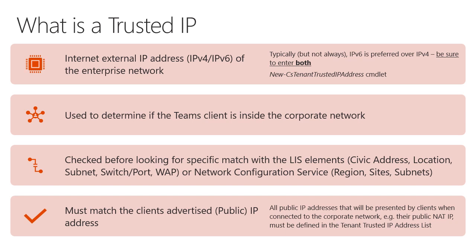Trusted IP matching is checked before looking for any other matches. If you want to do LIS dynamic lookup — civic address, location, subnet, switch port, wireless access point — or dynamic policy assignment through the network configuration service, the first requirement is matching the client to a trusted IP. If the Teams client can't match, processing stops and none of the other items are checked. You must match the client's advertised public IP address with configured trusted IPs.